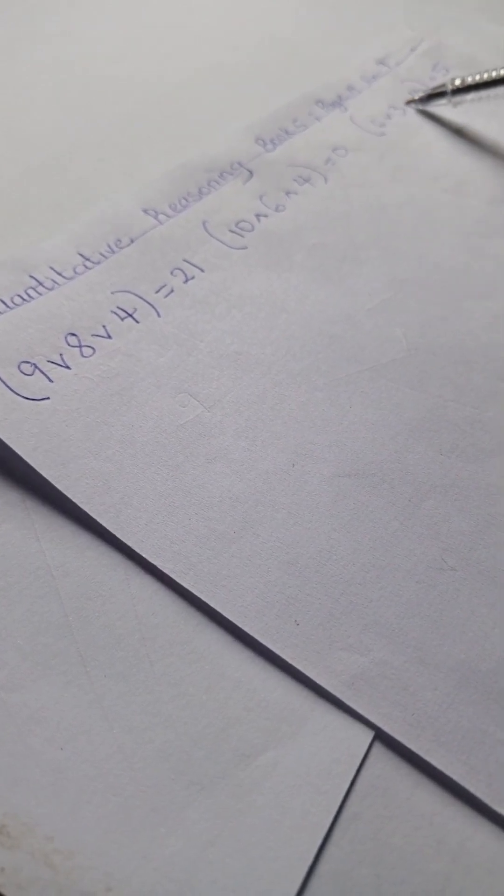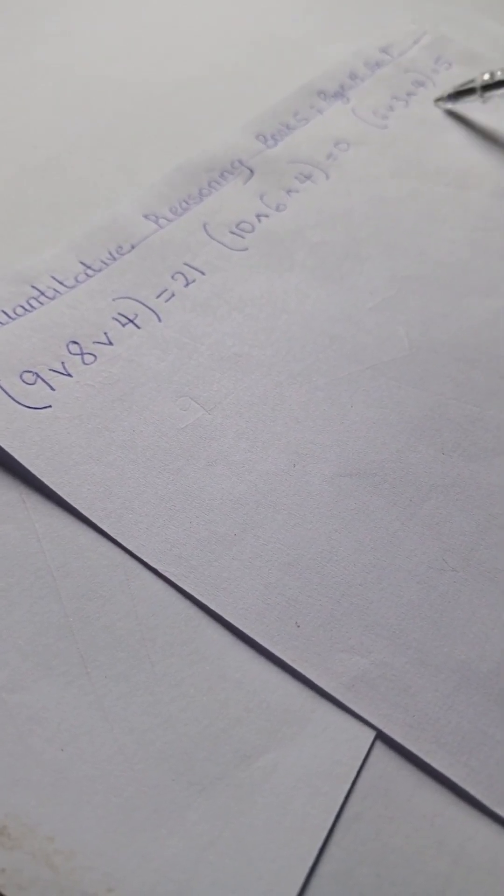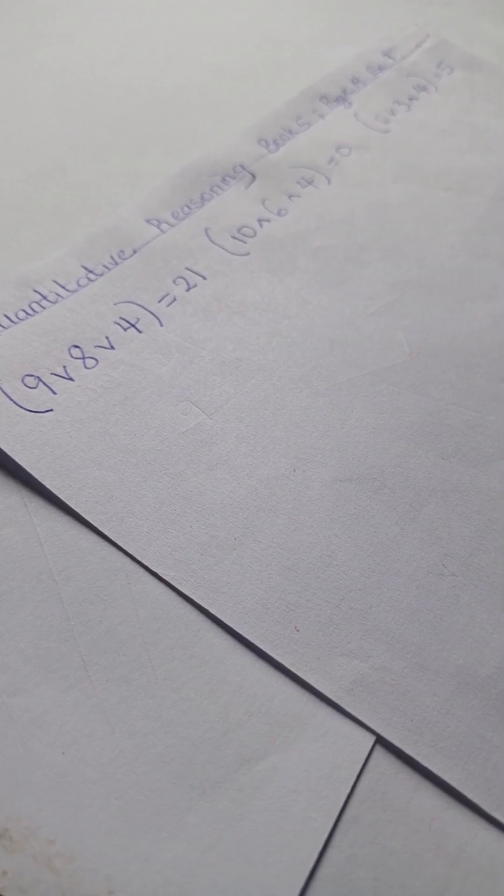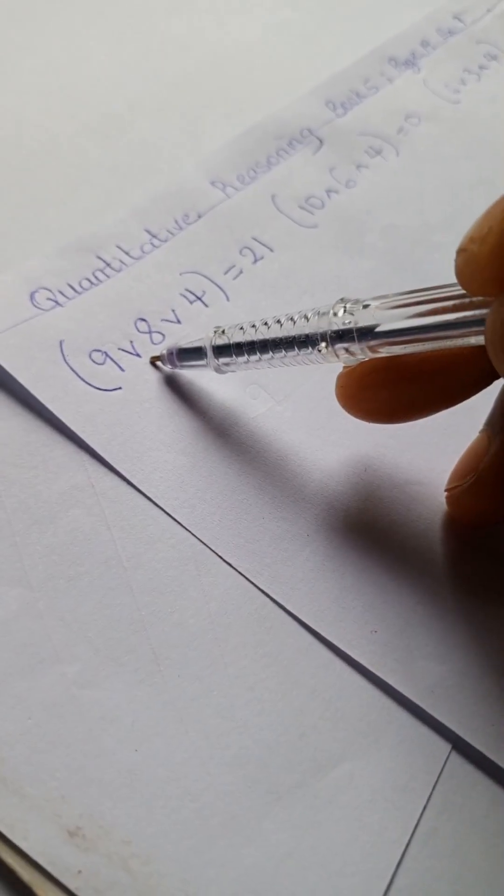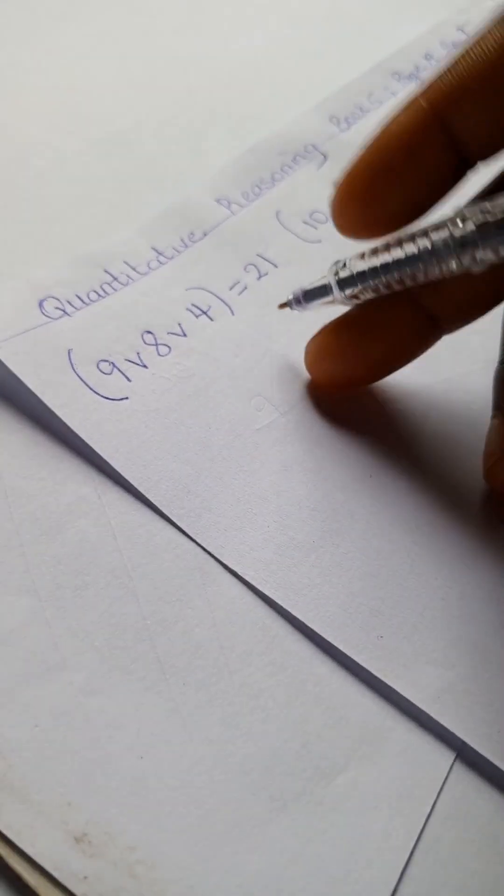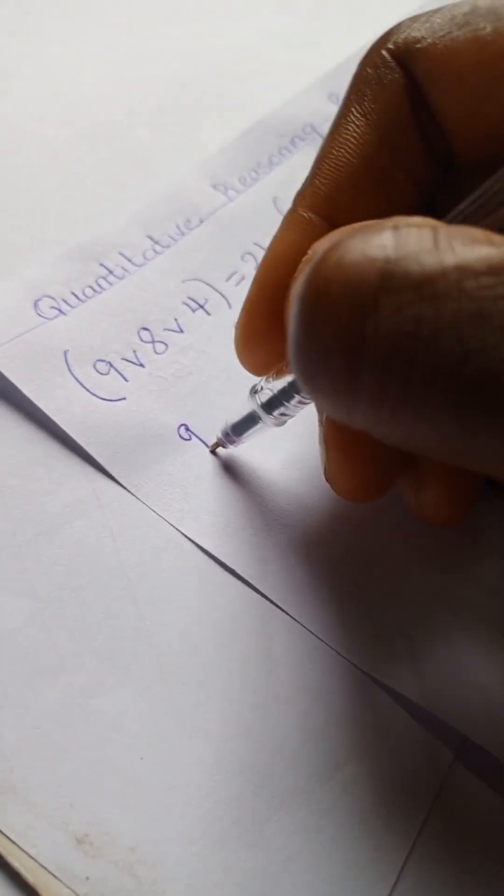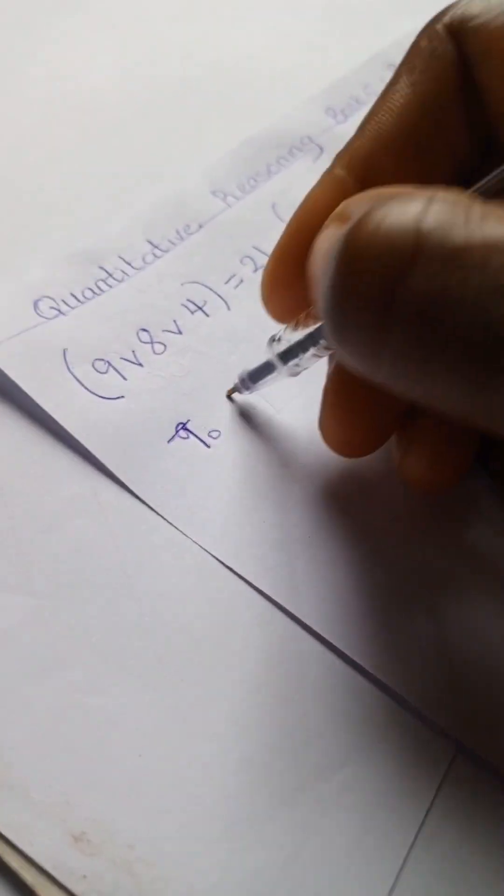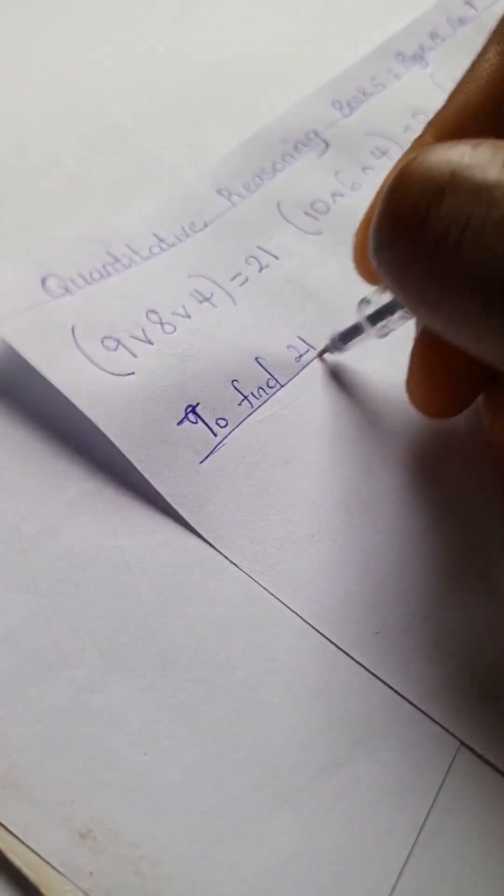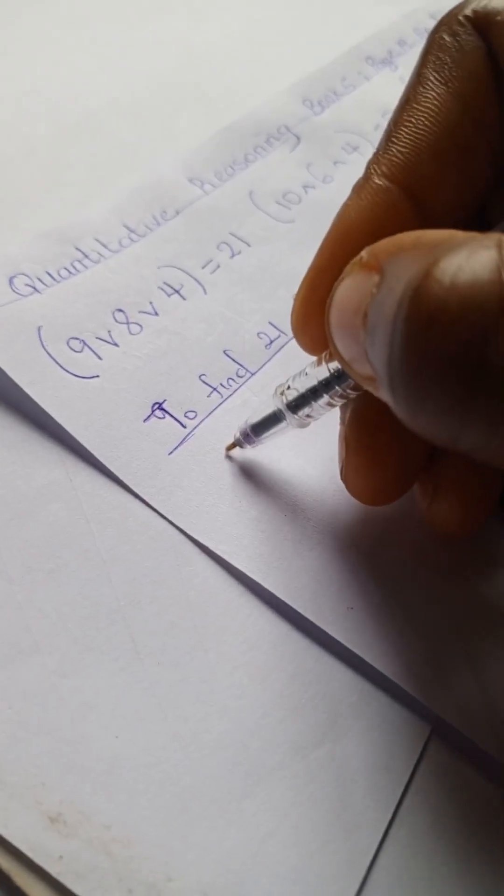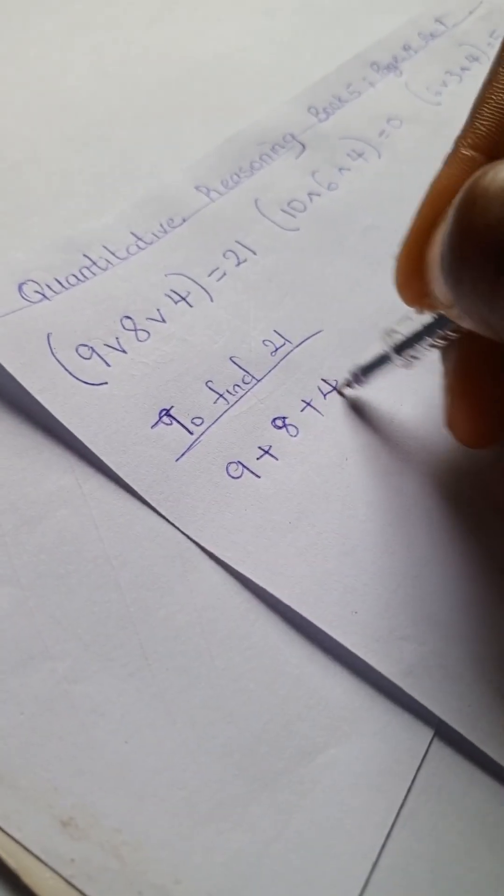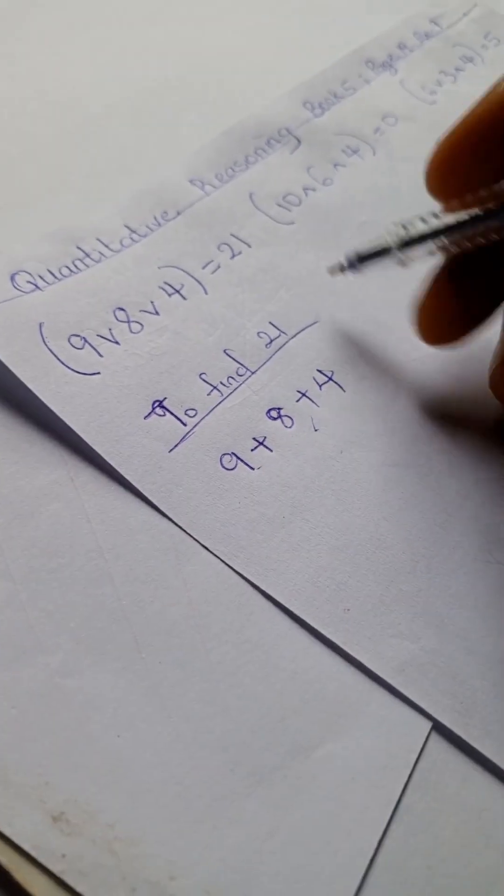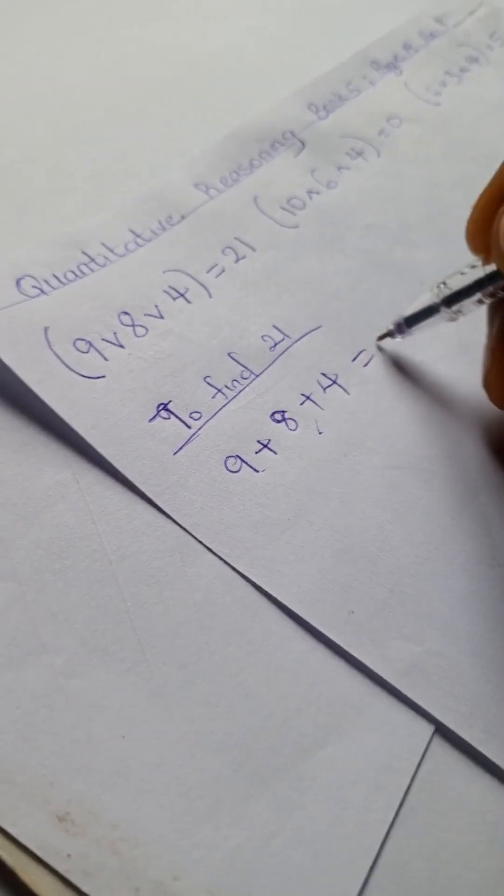Here we have the V and the facing down, the inverse. So we're going to walk through this. Wherever you see this V sort of facing up, you're going to add. So we have 9 to find 21. We're going to have 9 plus 8 plus 4. 9 plus 8 is 17, 17 plus 4 is 21.